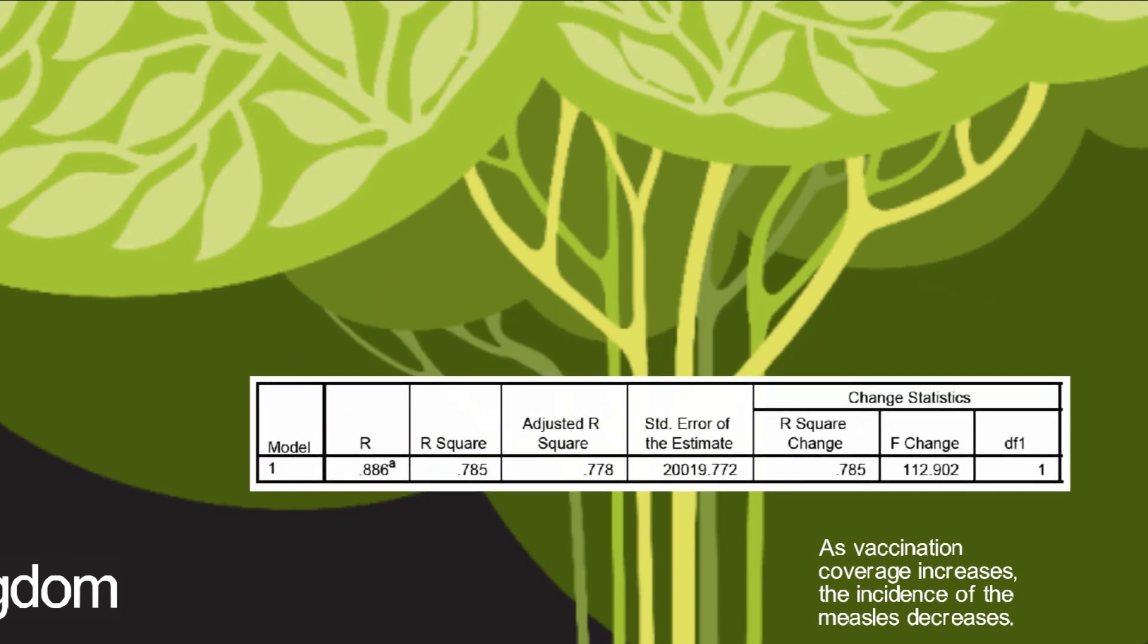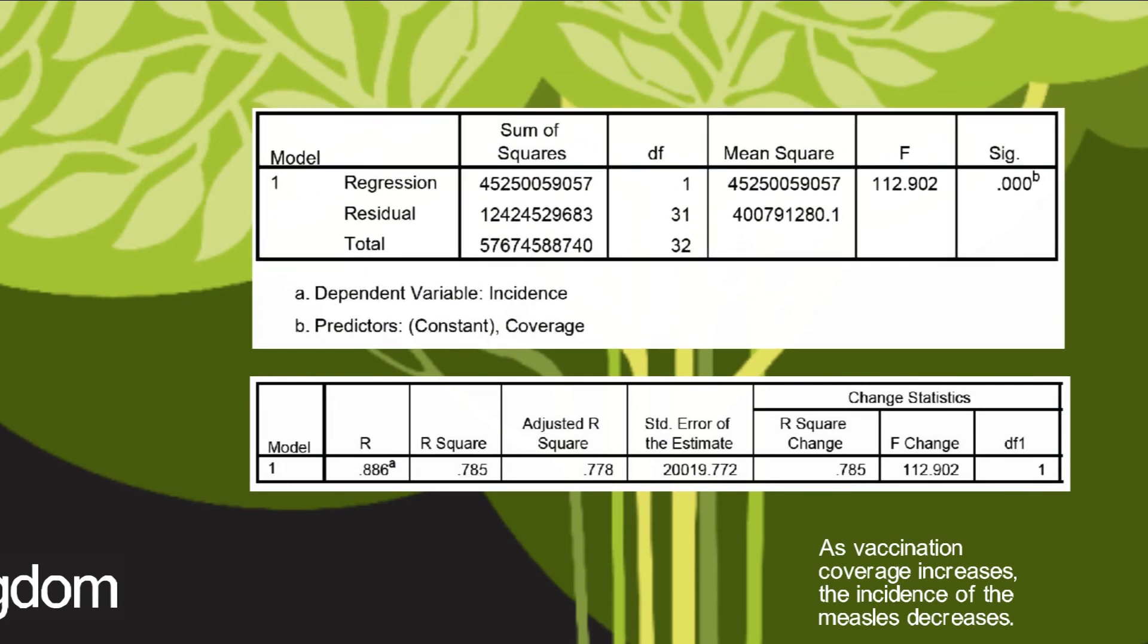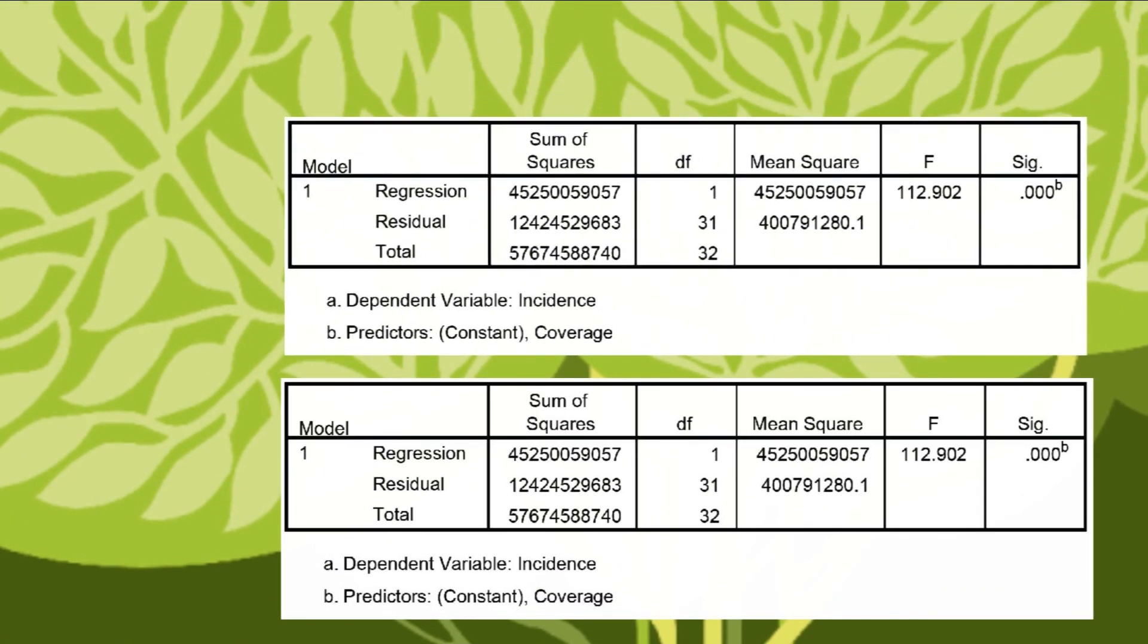For the United Kingdom, we can see that a regression analysis shows to be extremely statistically significant. Furthermore, the independent variable is able to predict. The analysis has a relatively high practical significance with a p-value of 0, an adjusted r-squared value of 0.778, and a negative beta.